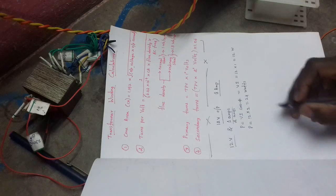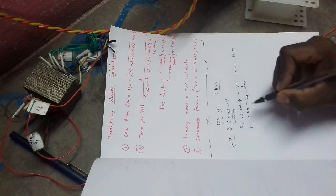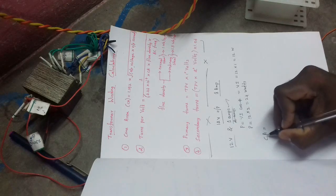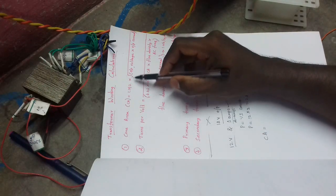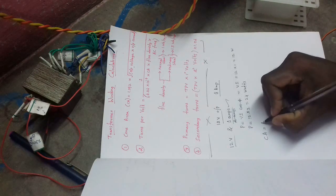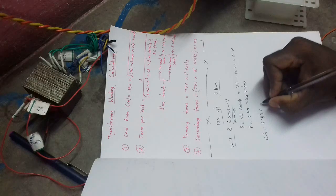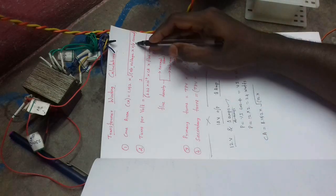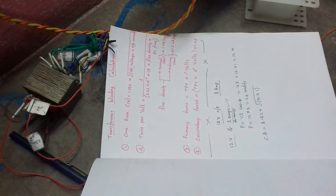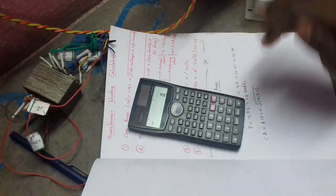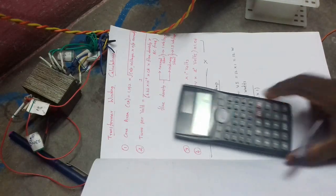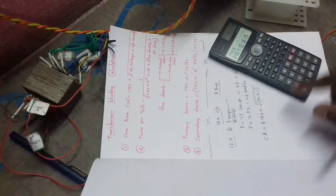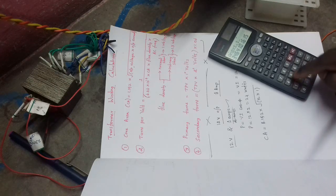24 watts. 1.5 per hour, 2.5 per hour. Core area is equal to 1.5 per hour, 2.5 per hour. Now we have to calculate the square root of the output. The current is 1. Now we have to calculate the square root of the answer, add 1.152.